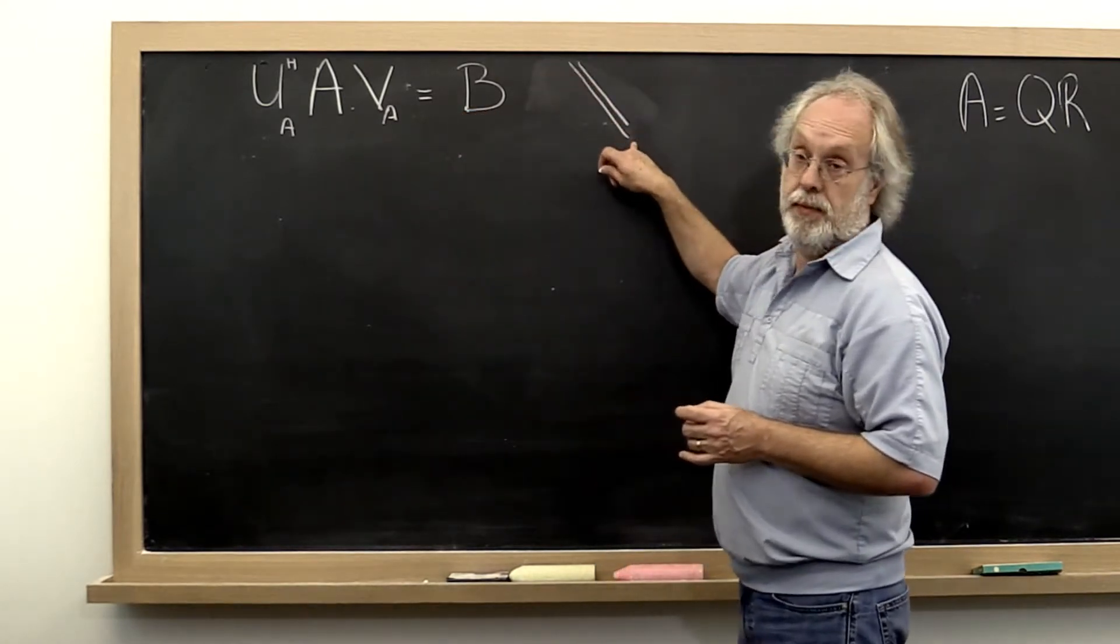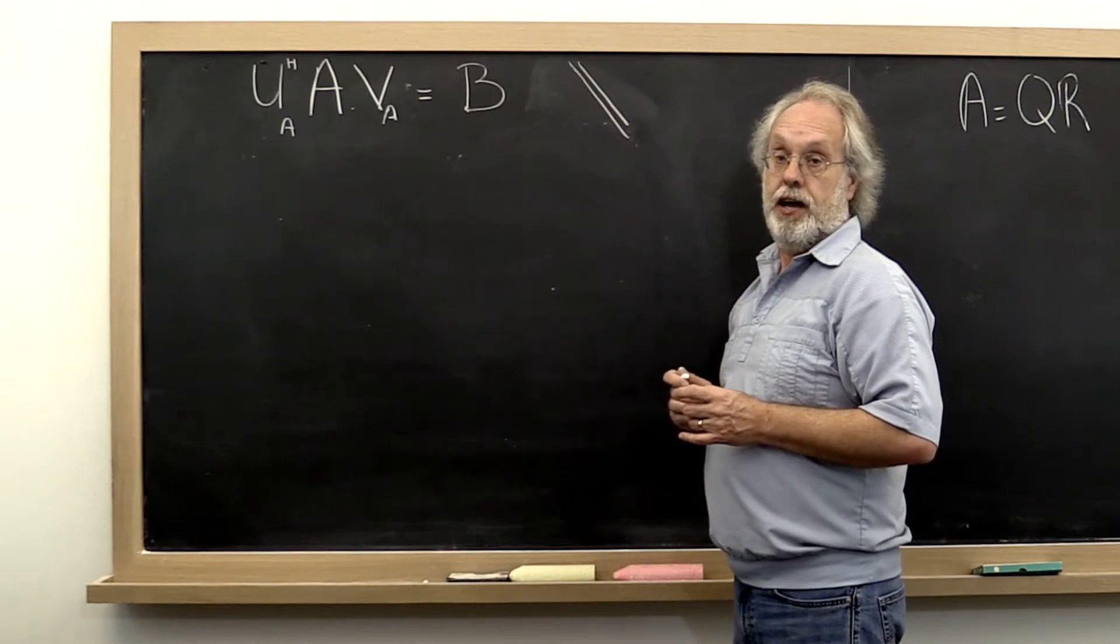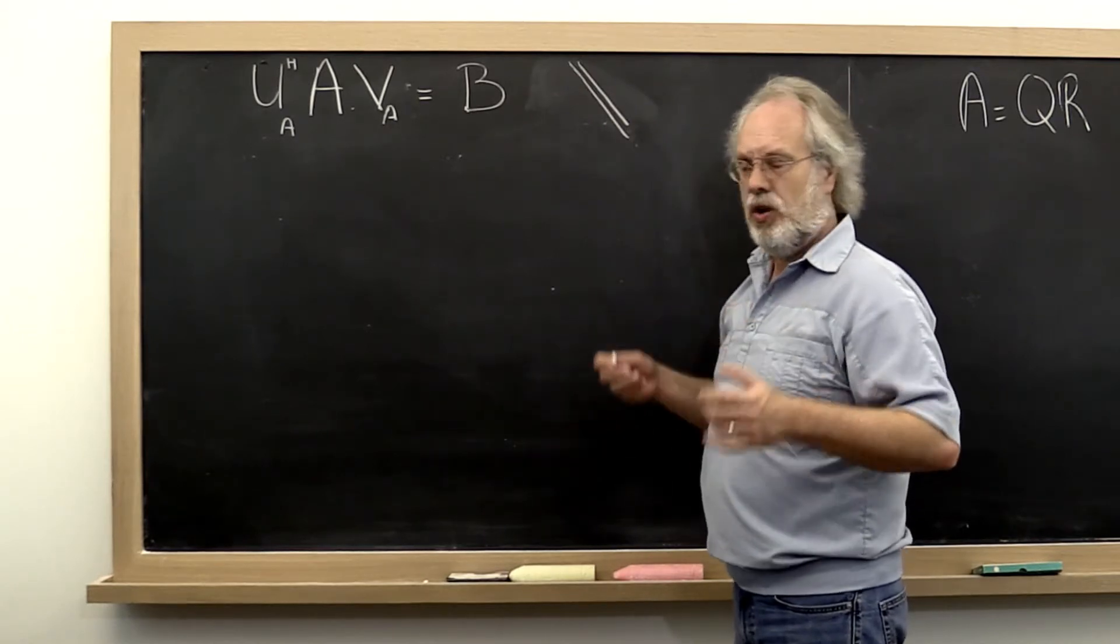A bidiagonal matrix is a matrix with the diagonal and then only the super diagonal. How can we do that?